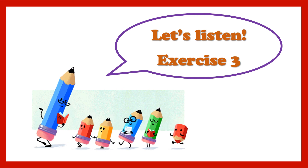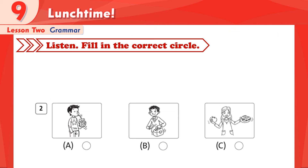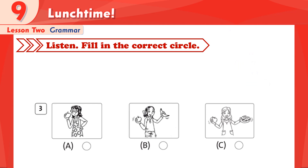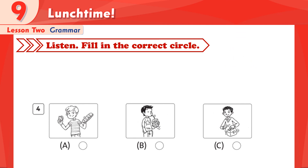Now let's practice listening in Exercise 3. Listening 18. Listen and fill in the correct circle. 1: I have an apple and a banana. The answer is B. Excellent! 2: I don't have my lunch box. I have a drink. The answer is A. That's a good choice! 3: I have an apple. I don't have a banana. The correct answer is A. Very good! 4: I have my lunch box. I don't have a drink. The answer is C. Well done!